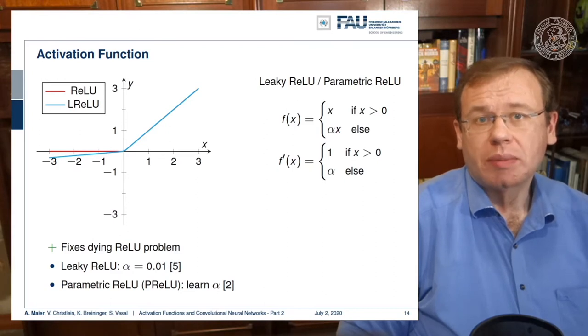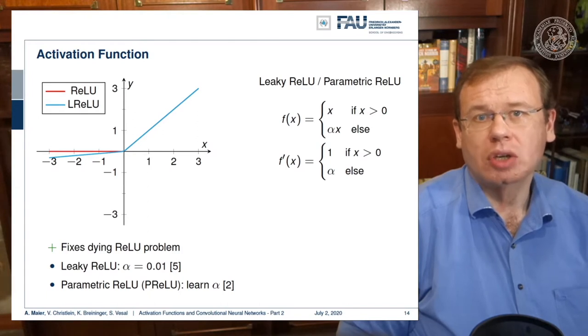A typical setting of the values is 0.01. The parametric ReLU is a further extension. Here you make alpha a trainable parameter. So you can actually learn for every activation function how large it should be.